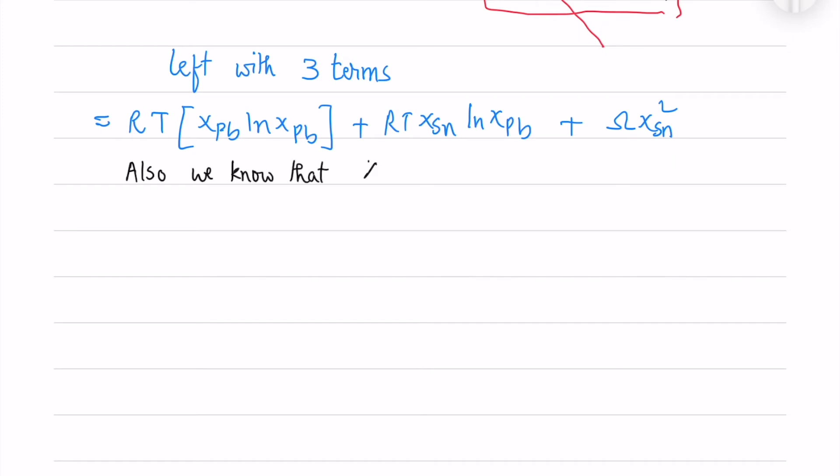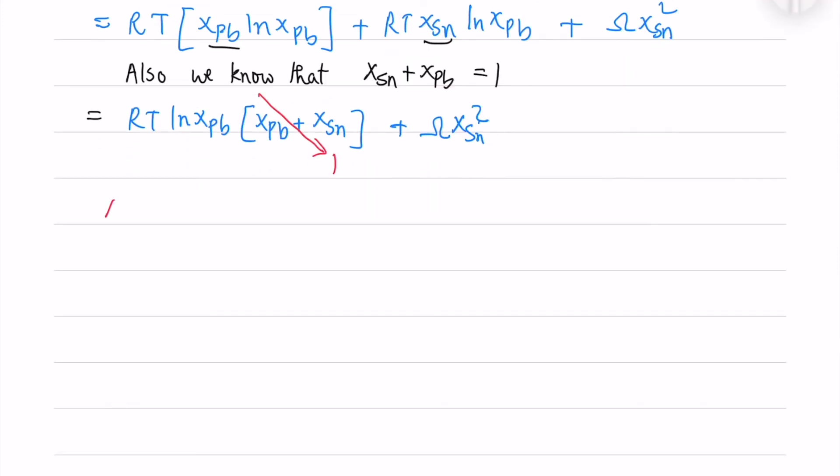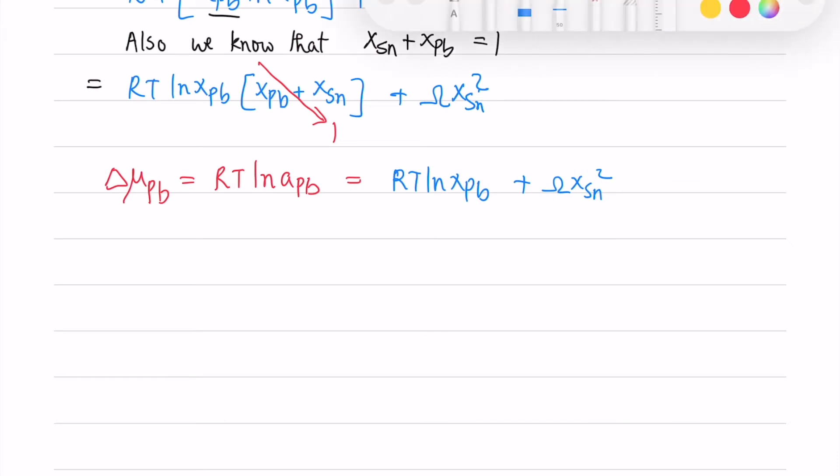One is RT ln x_Pb and RT ln x_Pb and omega x_Sn square. Also we know that the summation of the mole fractions, the sum of the mole fractions, is 1. So that simplifies this further. Now we have the chemical potential equals RT ln of activity of Pb equals the two terms which I have simplified.